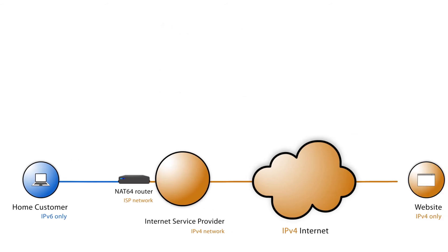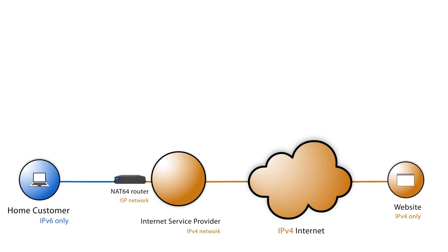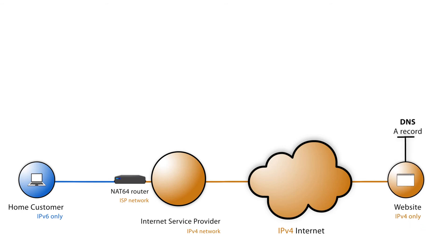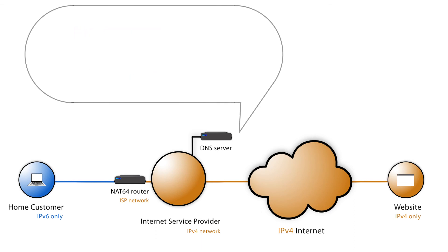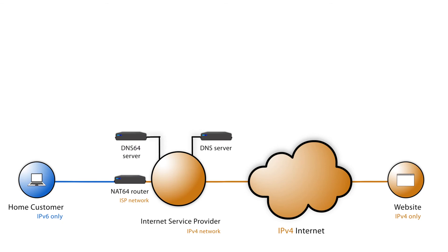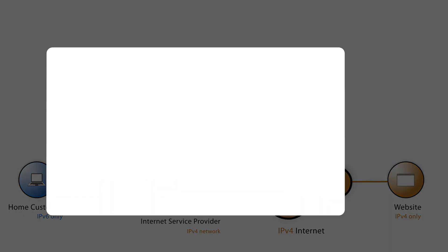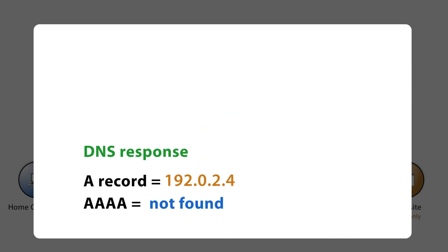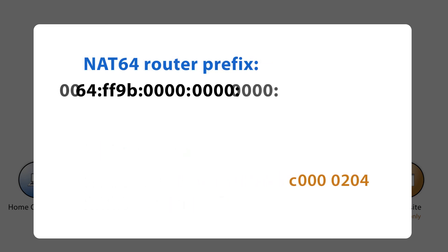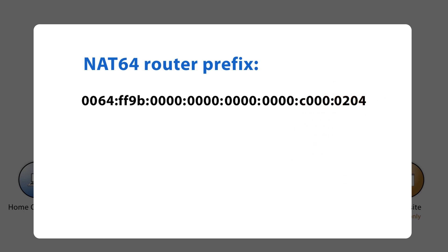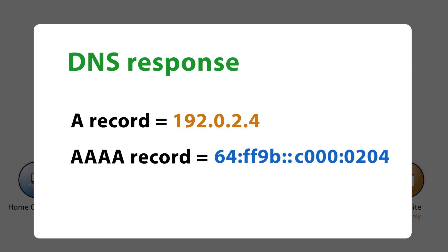What if the customer wants to access an IPv4 website? The customer is IPv6-only, the website is IPv4-only, so it only has an A record. When the customer sends a query for a quad-A record for this website, the DNS response for the quad-A record will be empty. One solution for this is DNS64. When an IPv6 client sends a request to a DNS server for a website's quad-A record and does not find one, it will still have the A record from the website. Therefore, the DNS64 server will map the A record into a quad-A record based on the NAT64 router's IPv6 prefix. Then the DNS response will be sent to the client.